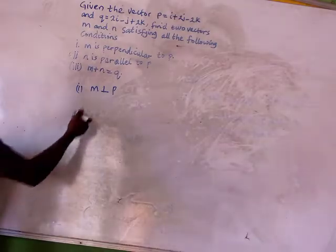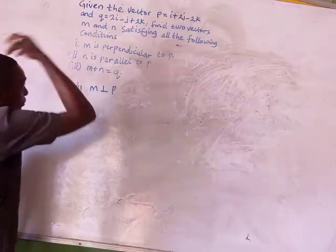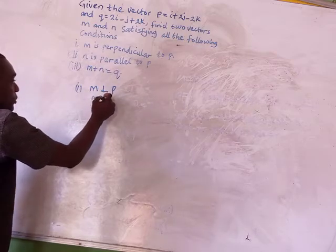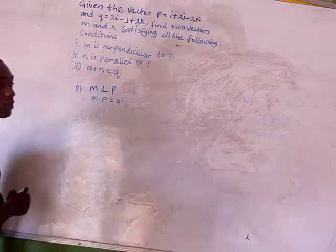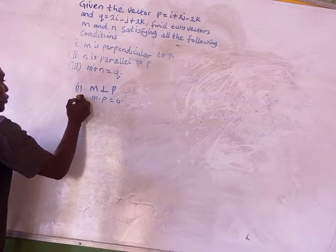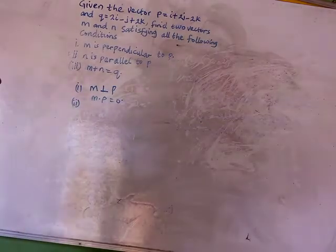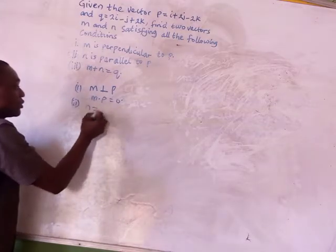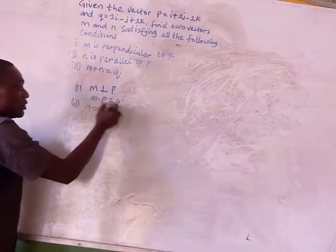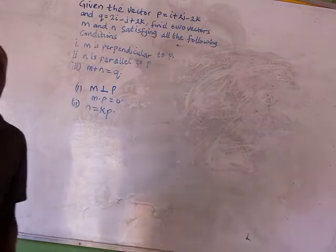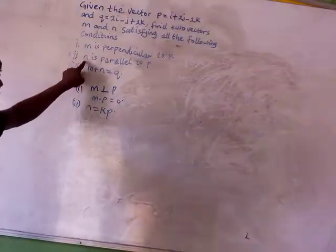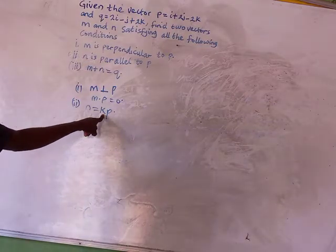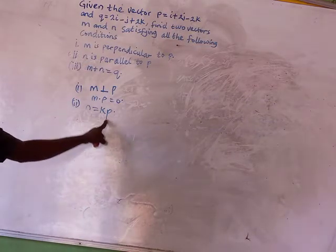If two vectors are perpendicular to each other, their dot product is equal to zero. For condition 2, if two vectors are parallel to each other, one vector is just a scalar multiplication of the other. So vector N is equal to a scalar k multiplied by vector P.